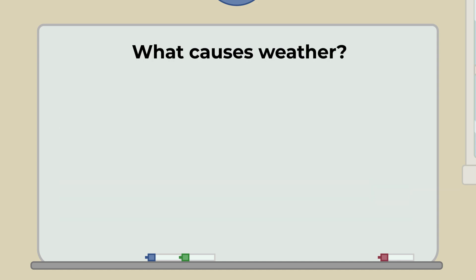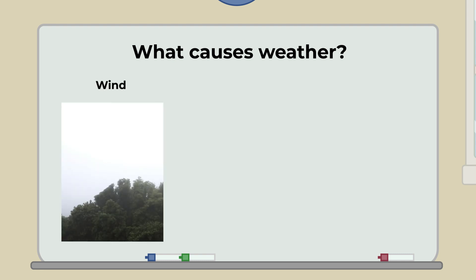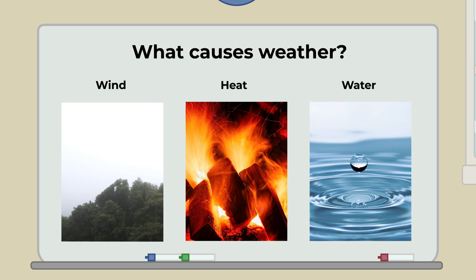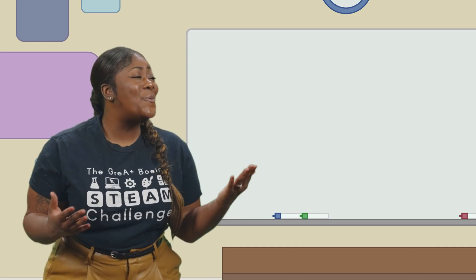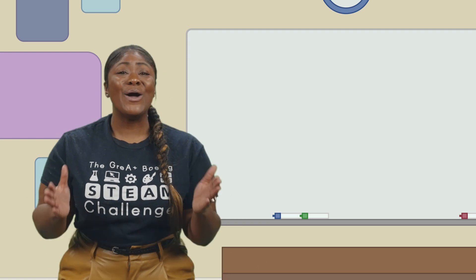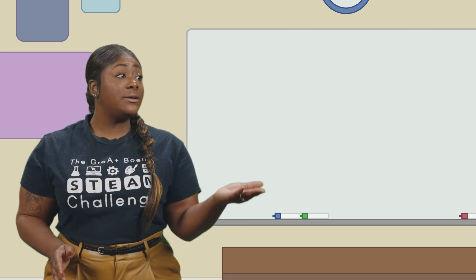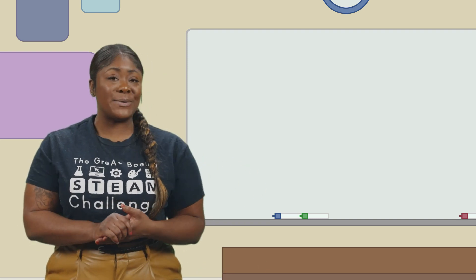Thanks. I also remember that it takes a combination of wind, heat, and water to make the different types of weather, like snow, rain, clouds, and wind. Wow, great job! Enlighten, what do you remember?